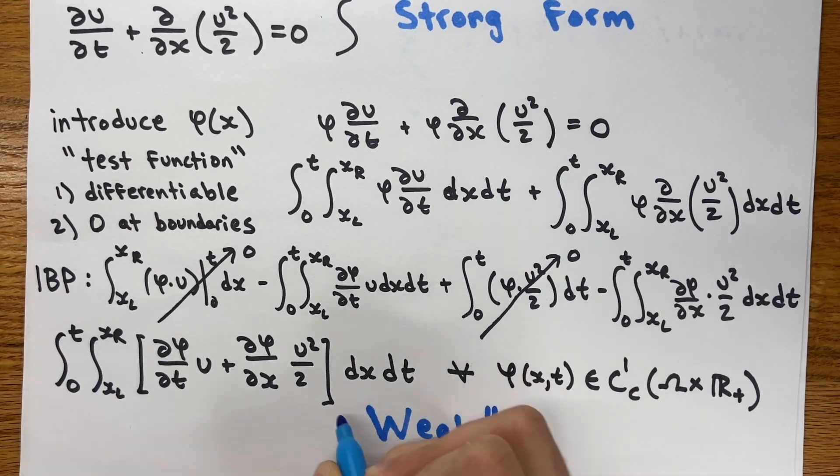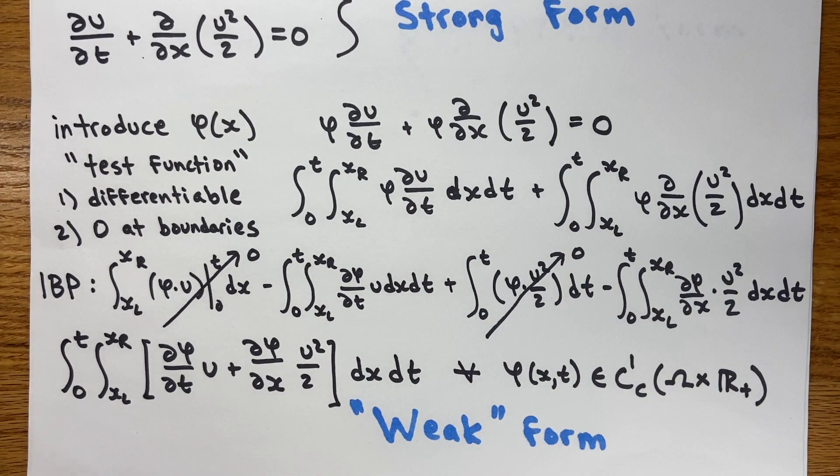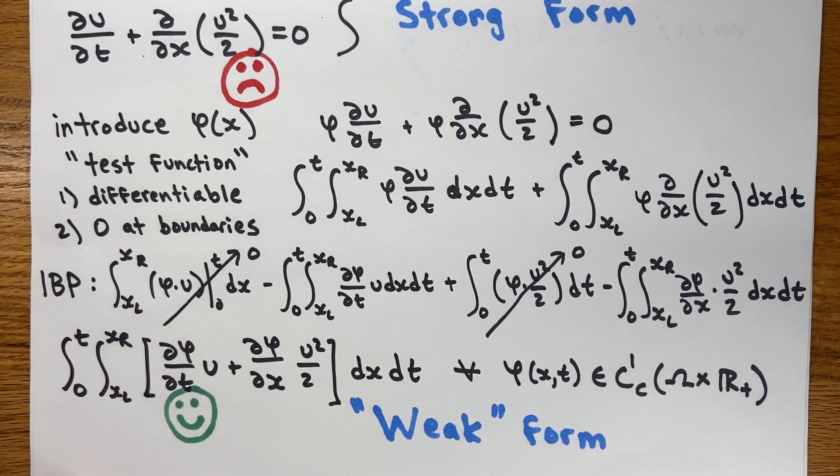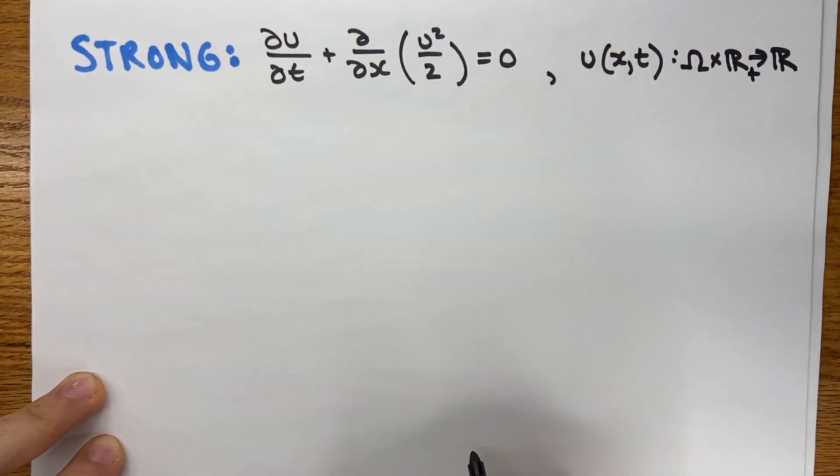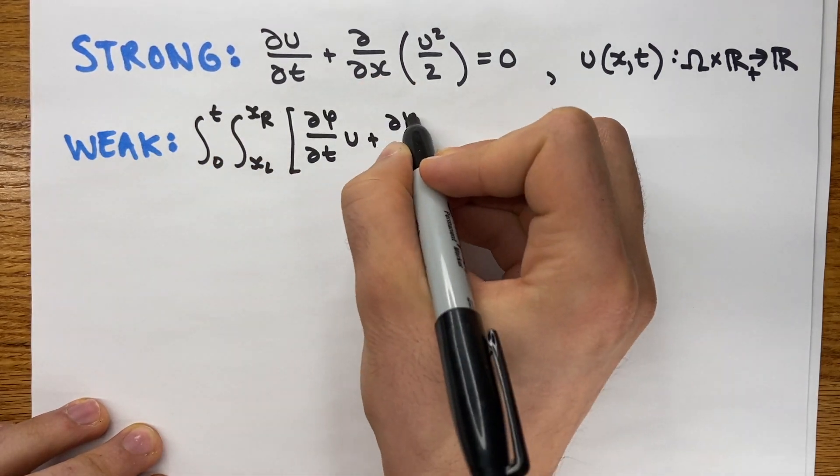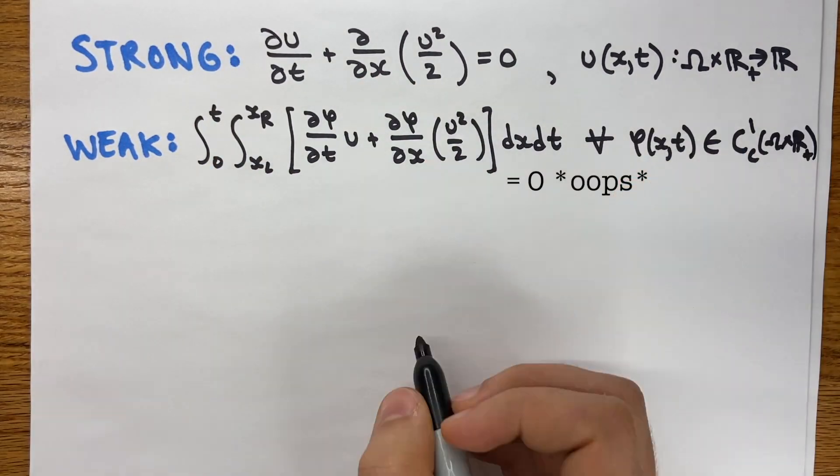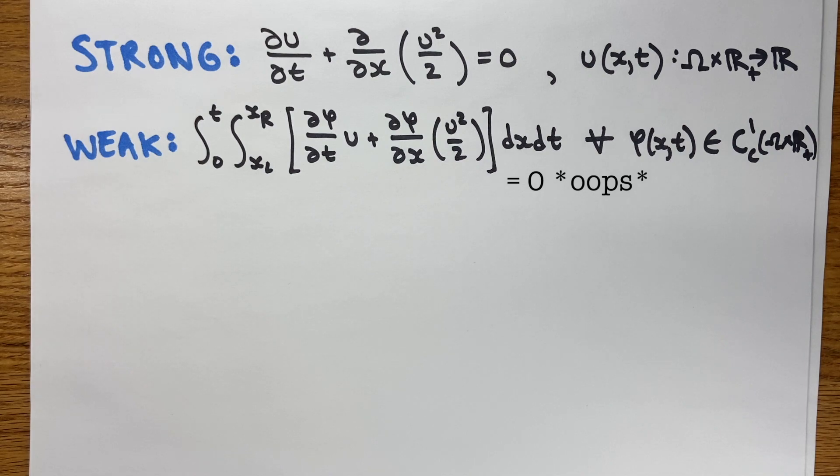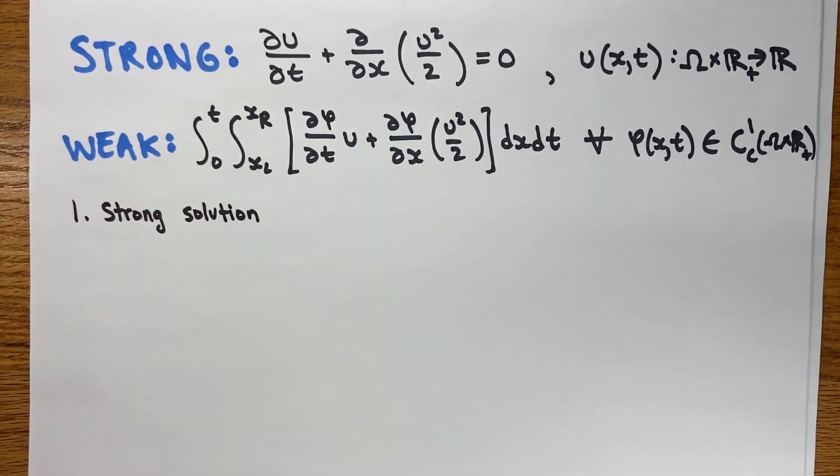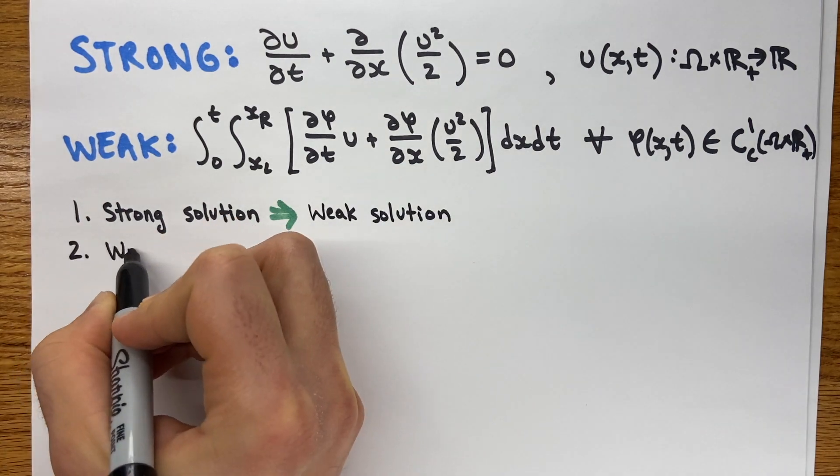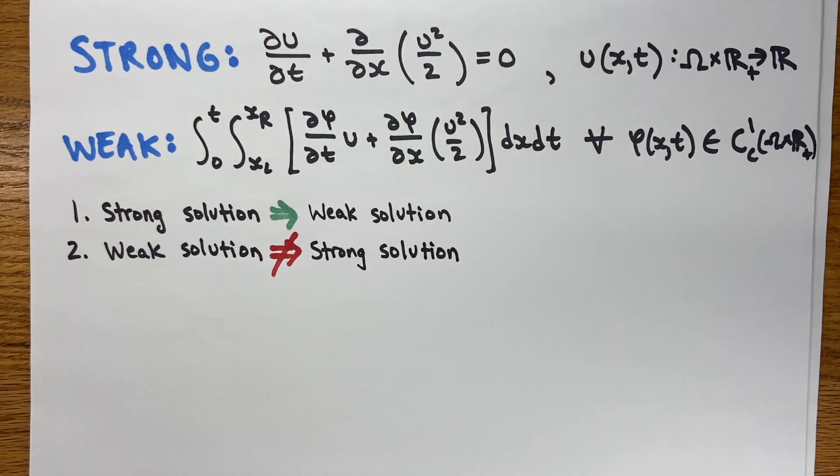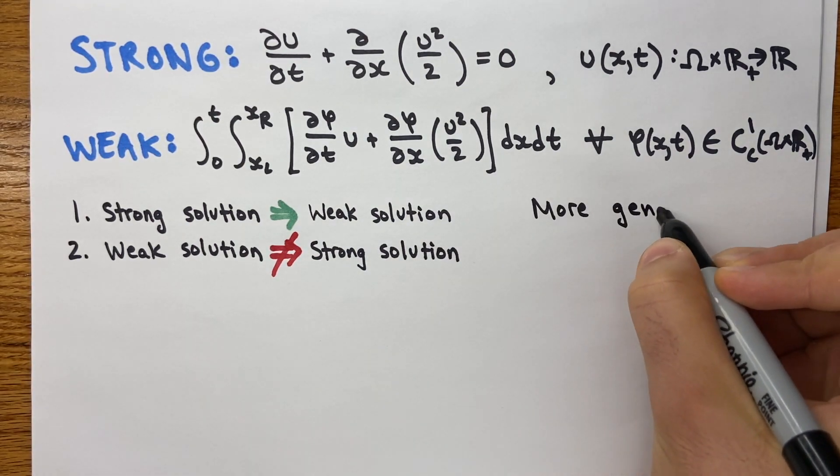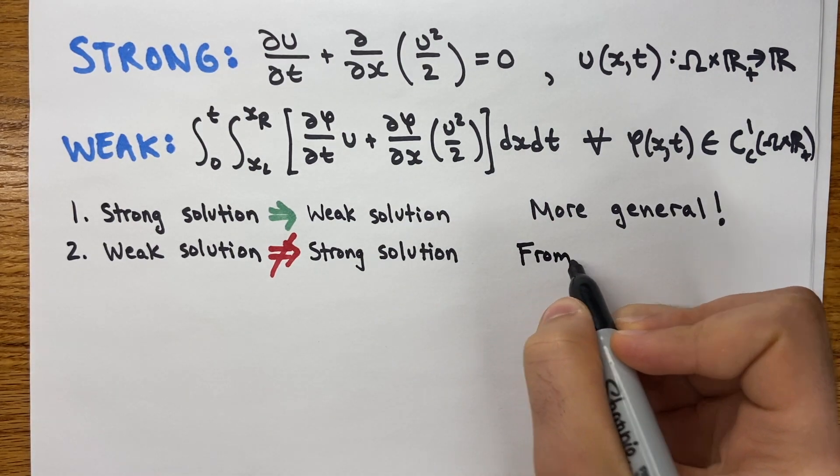It looks a bit weird, but you'll notice that all the derivatives that normally act on U have been transferred to the test function, which is differentiable. So we're no longer breaking any rules here with a discontinuous solution. So here we have the strong form and the weak form, side by side. In the strong form, the solution U has to be differentiable, but in the weak form U only has to be integrable. If a solution satisfies the strong equation, it also satisfies the weak equation. However, if a solution satisfies the weak equation, it does not necessarily satisfy the strong equation. Therefore, the weak equation allows for more general kinds of solutions.